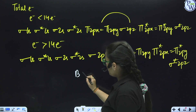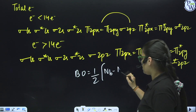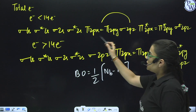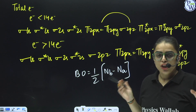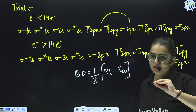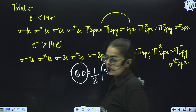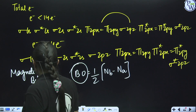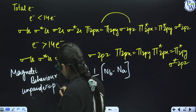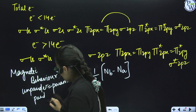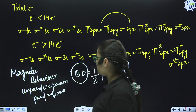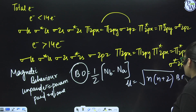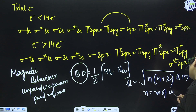To calculate bond order, the formula is: Bond Order = ½ × (number of bonding electrons − number of antibonding electrons). Count electrons in orbitals without stars (bonding) and subtract those in orbitals with stars (antibonding), noting that each p orbital contributes 2 electrons. For magnetic behavior: if there are unpaired electrons, the molecule is paramagnetic; if all electrons are paired, it is diamagnetic. Magnetic moment (μ) = √(n(n+2)) Bohr magnetons, where n is the number of unpaired electrons.